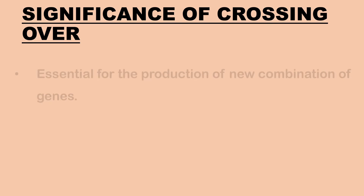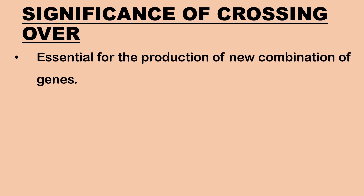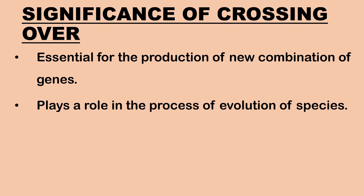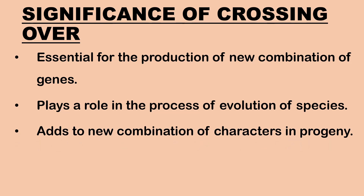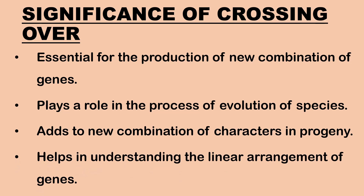Finally, let us learn about the significance of crossing over. Crossing over is essential for the production of new combinations of genes. It plays an important role in the process of evolution of species. It adds new combination of characters in the progeny and leads to genetic diversity. It also helps us to understand the linear arrangement of linked genes in the chromosome. So today we have learnt in detail about the mechanism of crossing over during prophase one of meiosis.